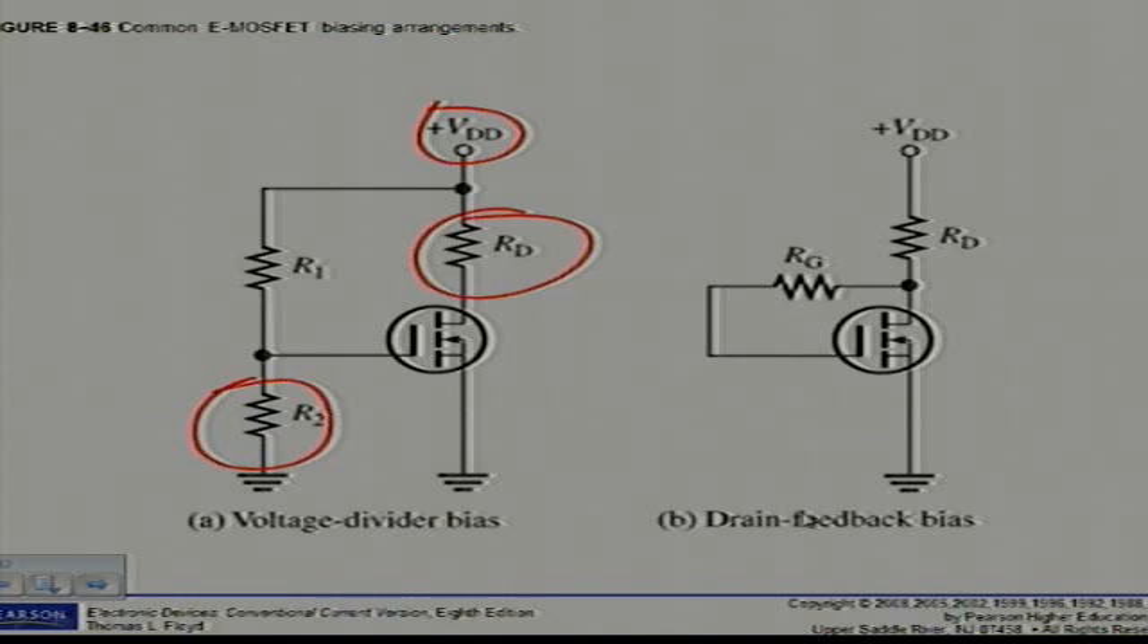Where ID is K in brackets multiplied with VGS minus VGS threshold squared, as we've seen in equation 8.4.